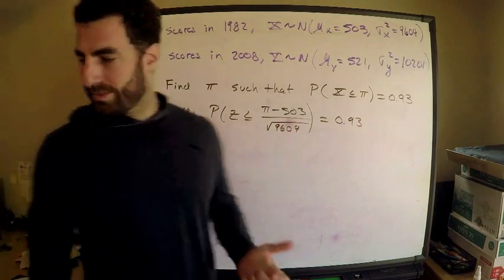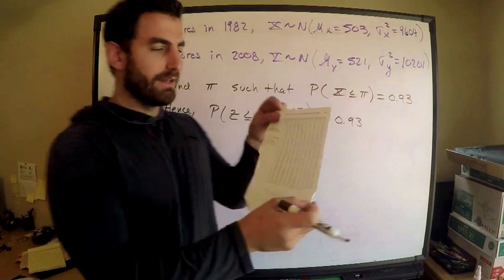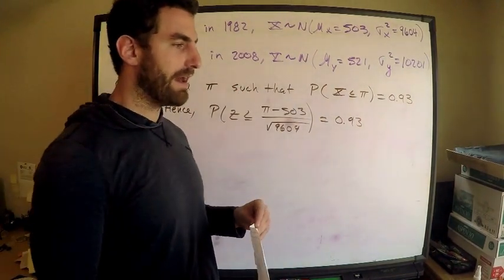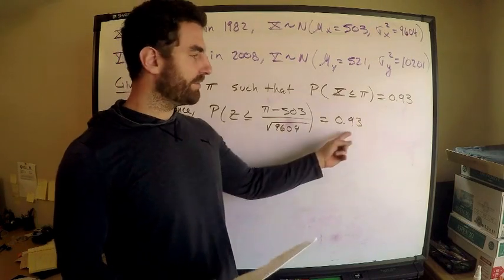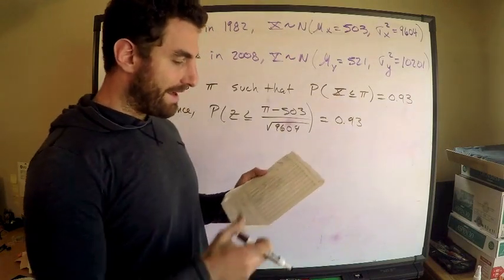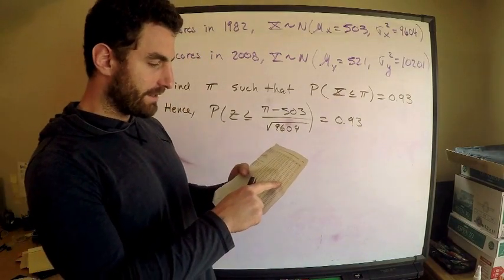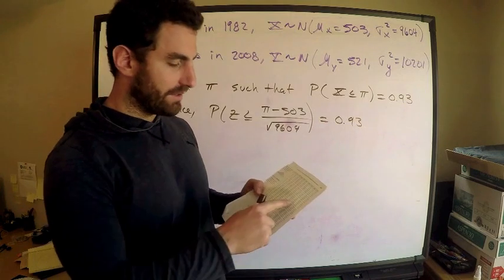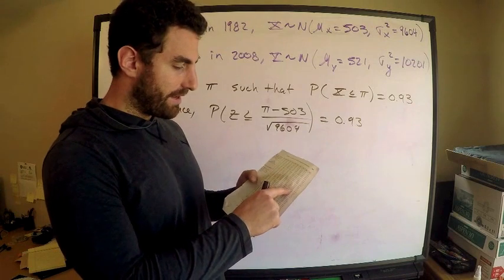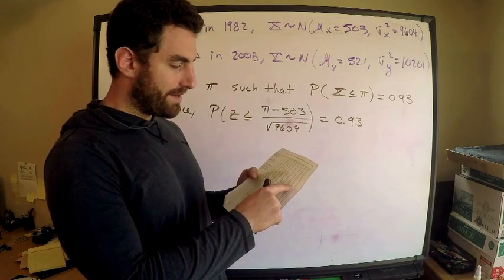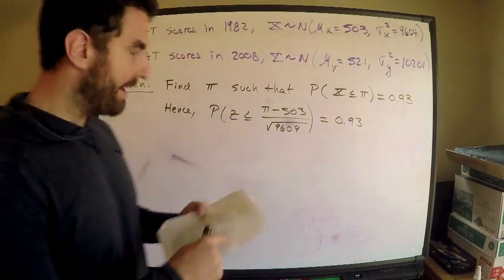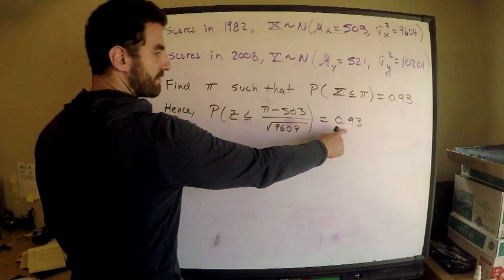Now I just need my Z table. Here's my Z table here, and I'm going to look for—you need to practice with this if you haven't had enough. You need to make sure you know where to find this number. This is in the interior of this thing. So 93rd percentile, I hate this situation because they don't have the exact number, but it's over here. 0.9306 is the value I'm looking at, and it's 1.48. So this corresponds to 1.48.